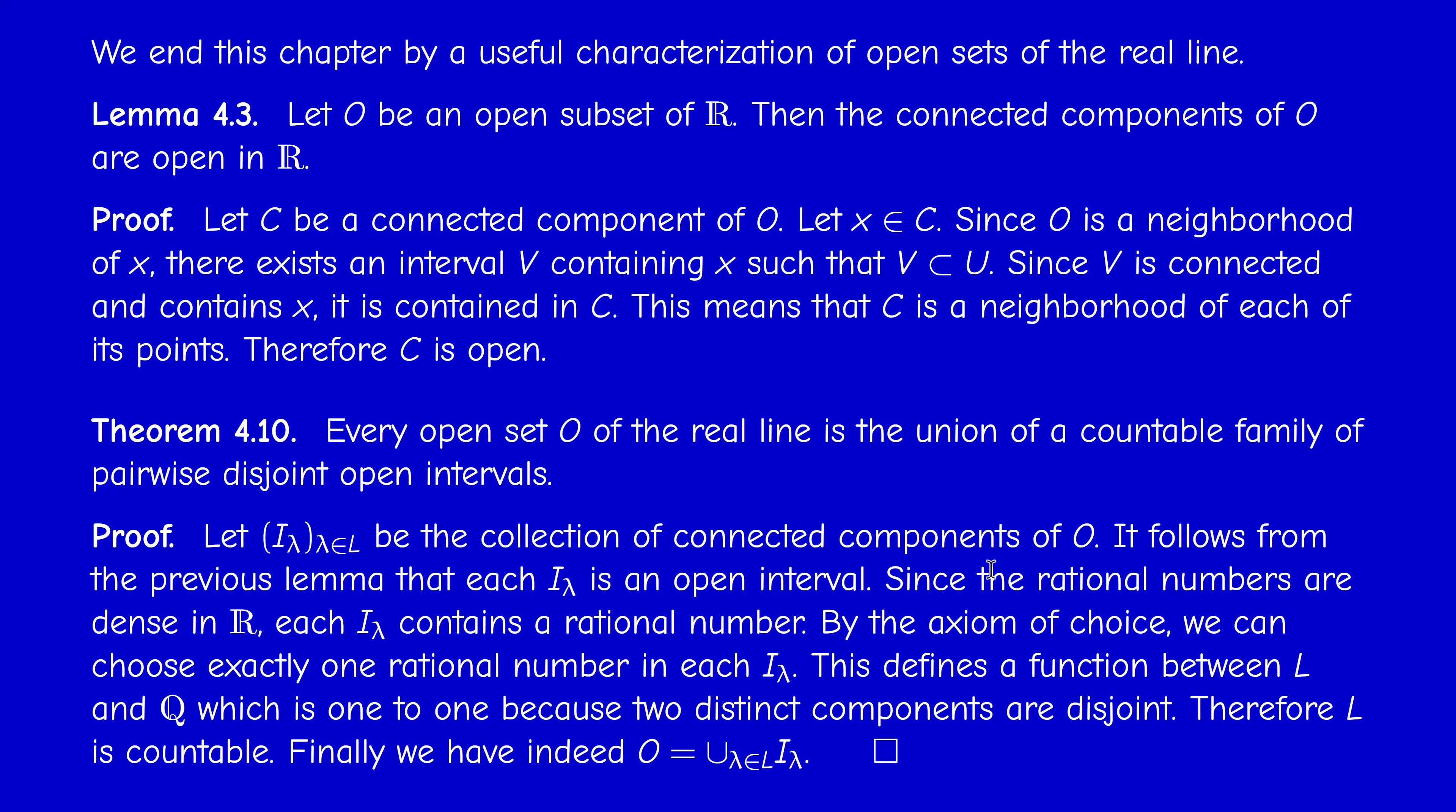So we can write O as union of open intervals of the form (a_n, b_n), if you like, like ℝ without ℤ. And this is the most general form of an open subset of ℝ.